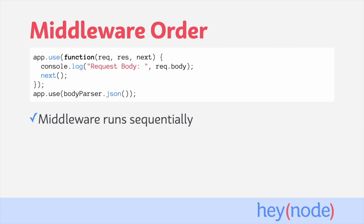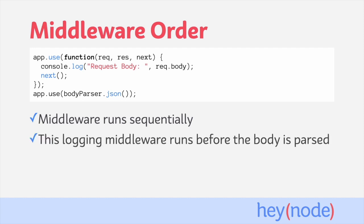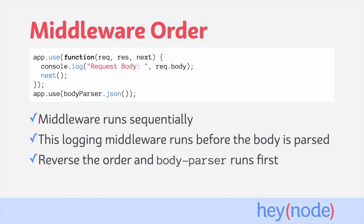The order in which you register middleware is important — middlewares run sequentially in the order they are registered. If we register a middleware that console logs the request.body property before we register BodyParser, the logging middleware runs before the body has been parsed. Reversing the order of these two middlewares would run BodyParser first, making sure that the request.body value is available when the logging middleware runs.